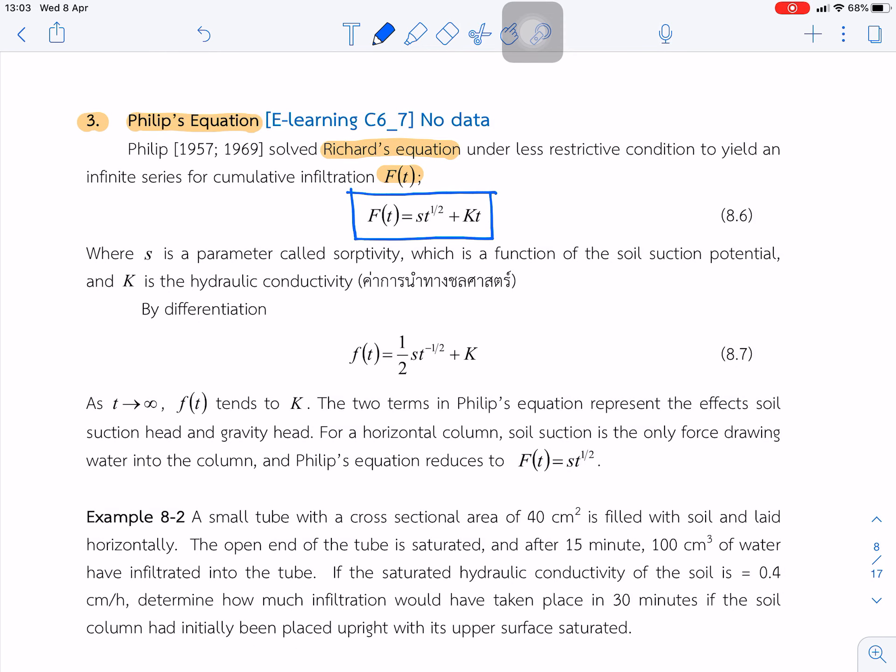And if we differentiate this first equation, we got the second equation, which is the equation of the infiltration rate. The parameter S is sorptivity, it's a function of the soil suction potential, and K is the hydraulic conductivity.